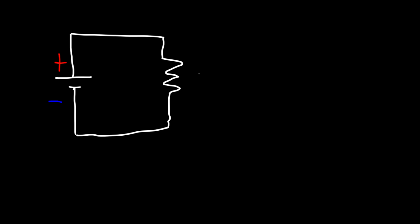The first symbol that you need to be familiar with is a battery. This is the positive terminal of the battery, and this is the negative terminal. Now let's connect it across a resistor — that's the schematic for a resistor. Keep in mind that current flows from the positive terminal towards the negative terminal, so in this case current is flowing in the clockwise direction.